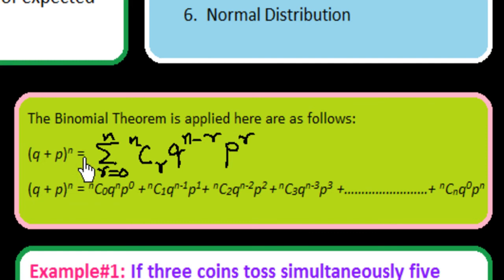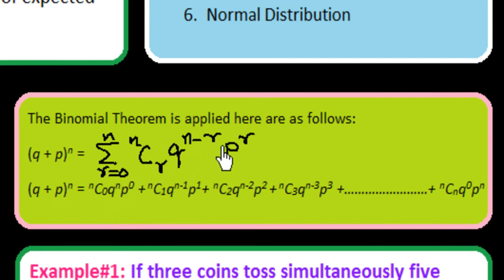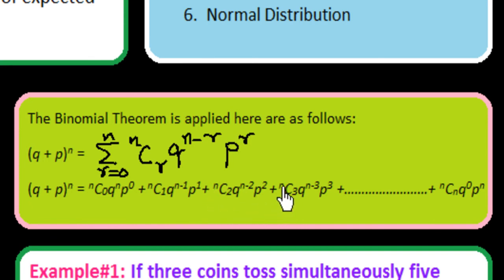So it is the summation of R from 0 to N: N combination R, Q power N minus R, P power R. If we expand this we get: N combination 0, Q power N, P power 0; plus N combination 1, Q power N minus 1, P power 1; plus N combination 2, Q power N minus 2, P power 2; plus N combination 3, Q power N minus 3, P power 3; and so on up to N combination N, Q power 0, P power N.